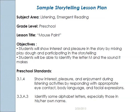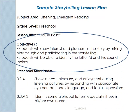The first part is the objectives, and notice how the objectives are written in measurable terms. 'The students will show interest and pleasure in the story by mixing Play-Doh and participating in the storytelling.' We can see whether they do that or not. We could have written 'the students will enjoy the story,' but how do we know if they've enjoyed it? We can't see enjoyment — we can only see actual behaviors.